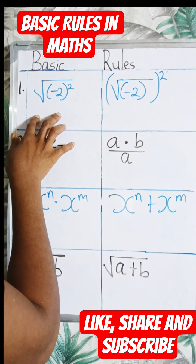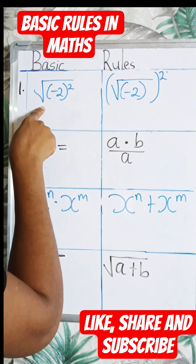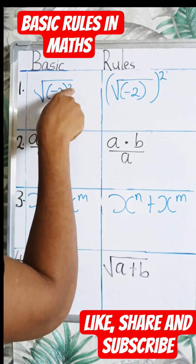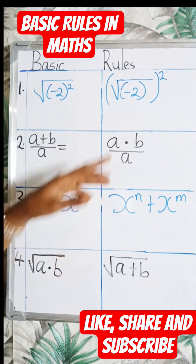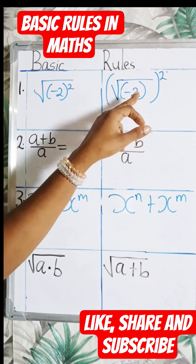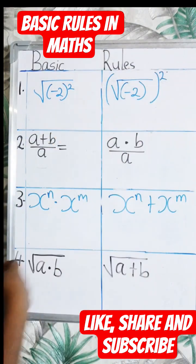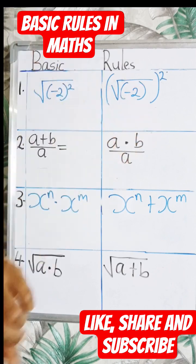Now here we have the square root of minus 2. The minus 2 is enclosed in a bracket and raised to power 2. And here we have the square root of minus 2, and then the root is enclosed in a bracket and raised to power 2. The two expressions are not the same.